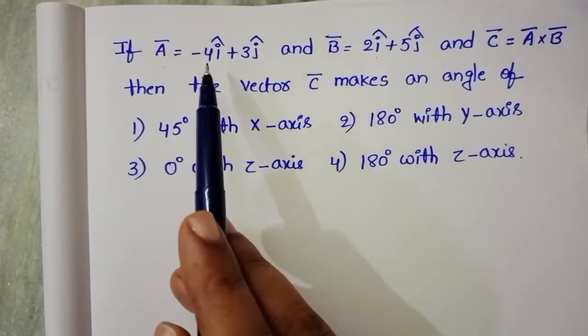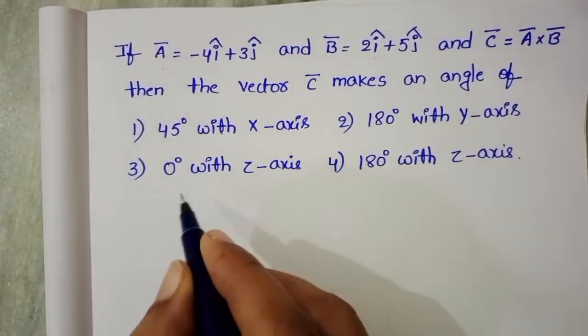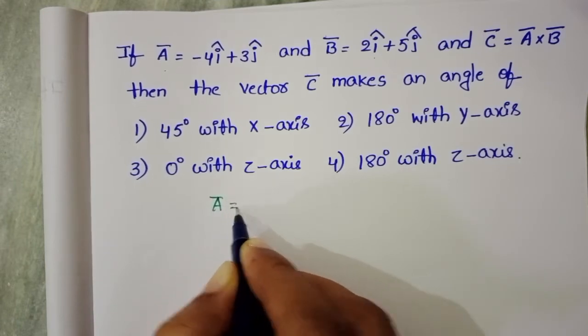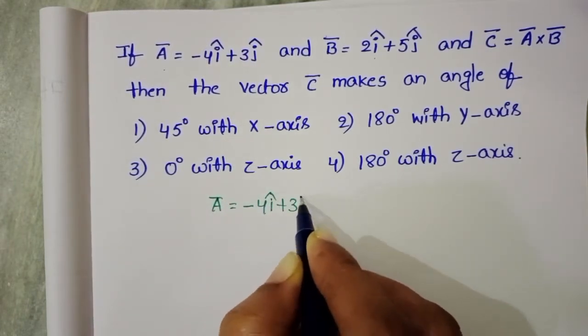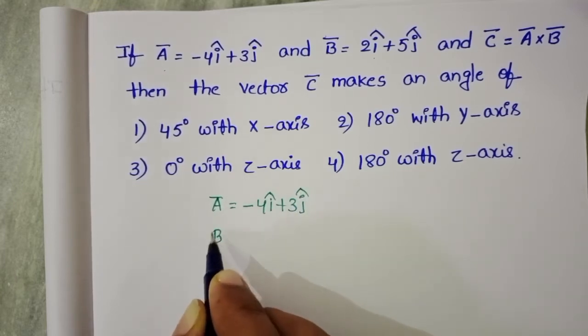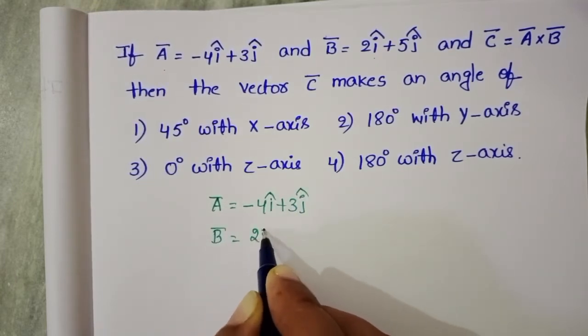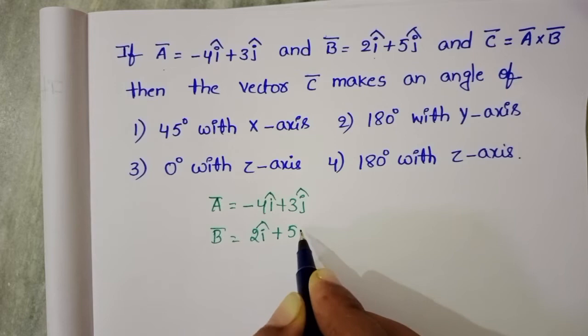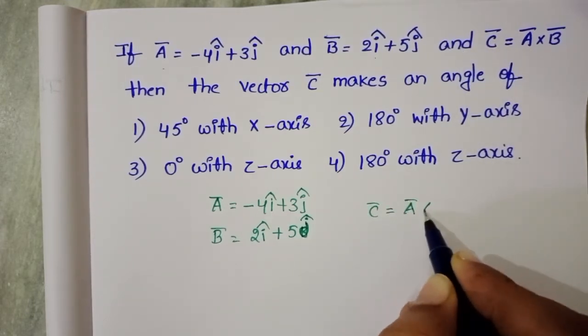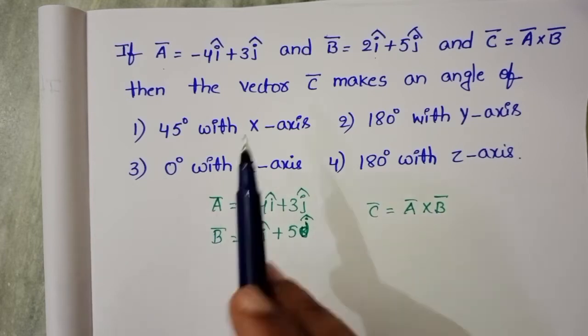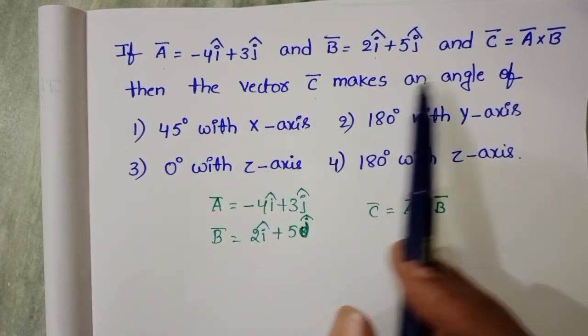If A̅ equals -4î + 3ĵ and B̅ equals 2î + 5ĵ and C̅ equals A̅ × B̅, then the vector C̅ makes an angle of...